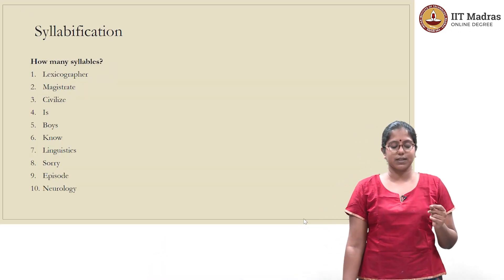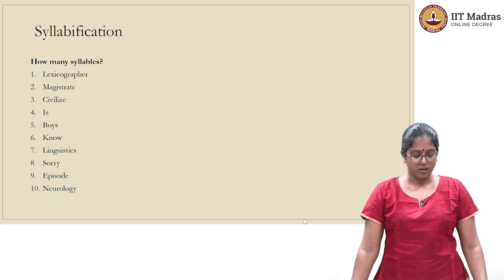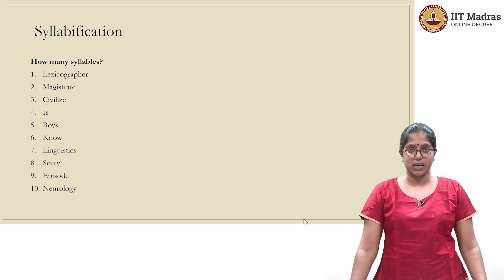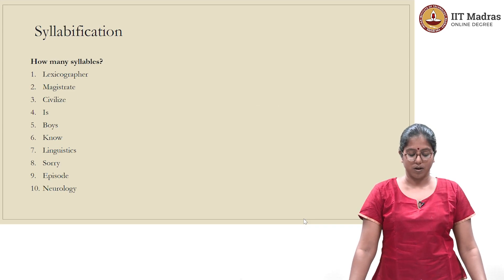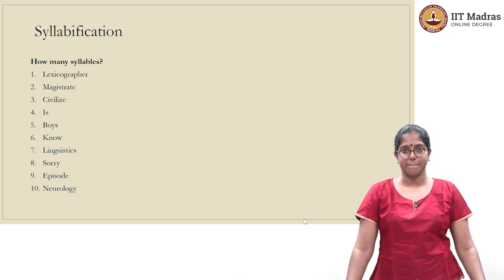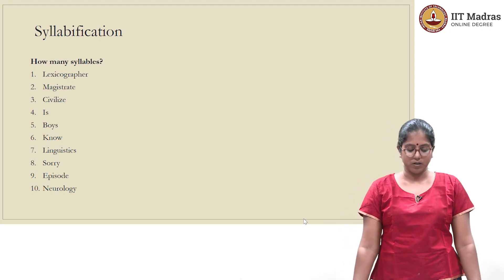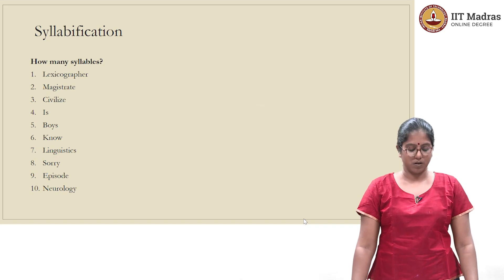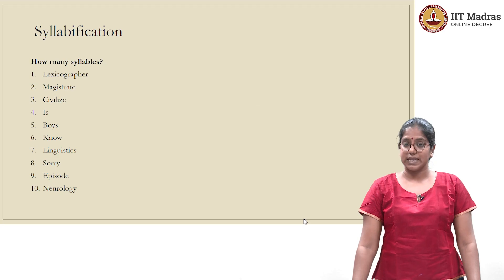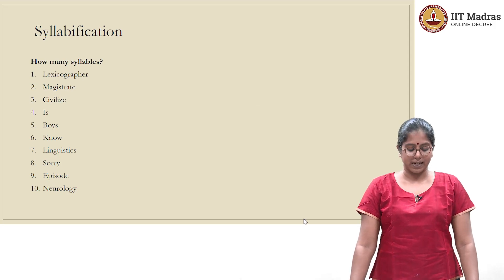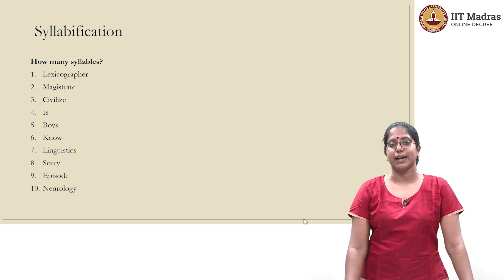The first set of questions is related to syllabification. How many syllables are there in the following words? The first word is lexicographer, second is magistrate, third is civilize, fourth is ease, fifth is boys, sixth is no, seventh is linguistics, eighth is sorry, ninth is episode, and tenth is neurology.